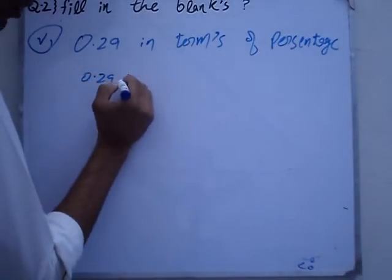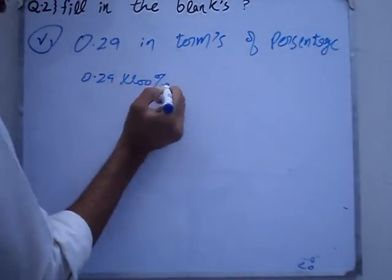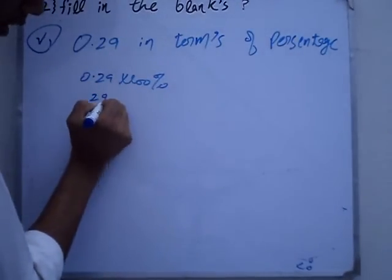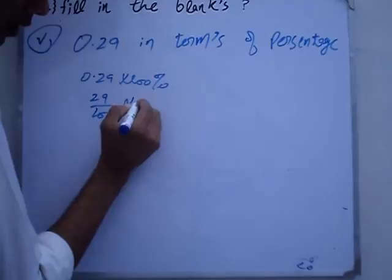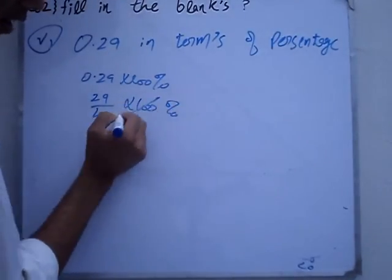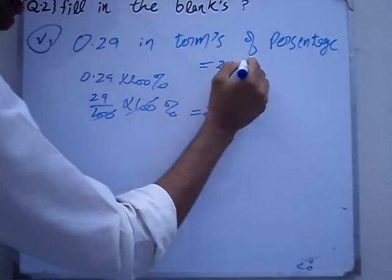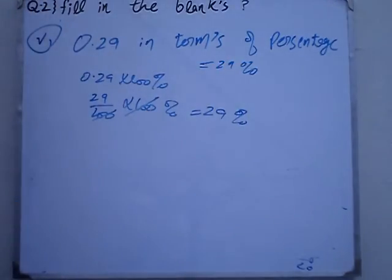0.29 equals 29 over 100, and 29 over 100 times 100 percent gives us 29%. Twenty-nine percent.